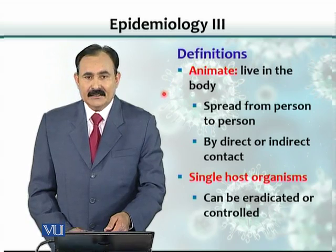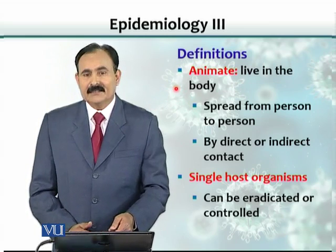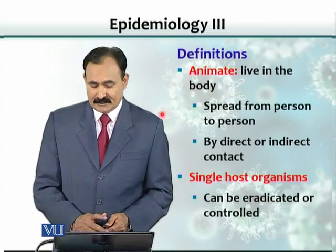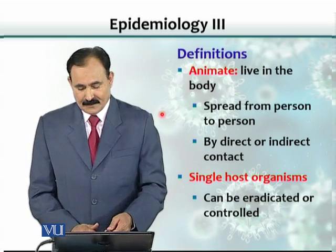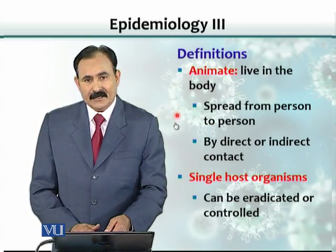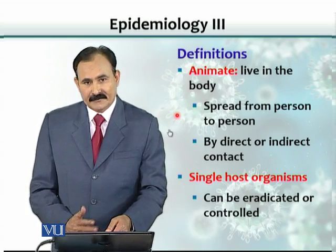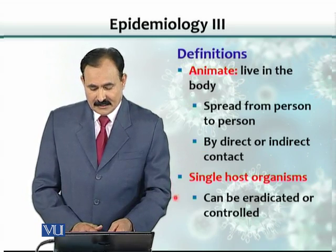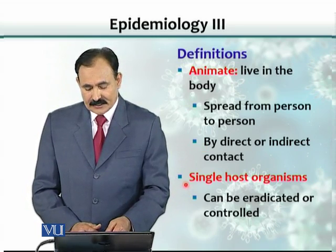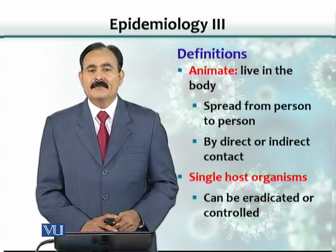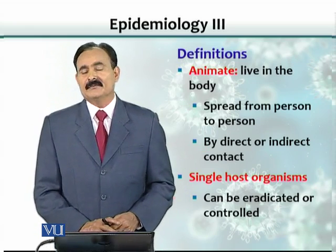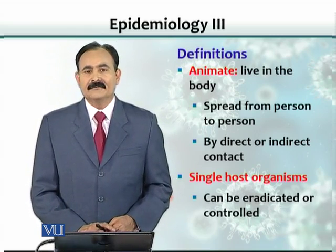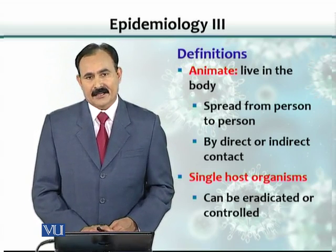Inanimate is one source; animate is another source. Animate sources are living objects like humans, animals, birds, and fish. These organisms spread from person to person, individual to individual, or animal to animal — either directly or indirectly. Diseases that only occur in one species are called single-host organisms, and those are easier for us to control or even eradicate.